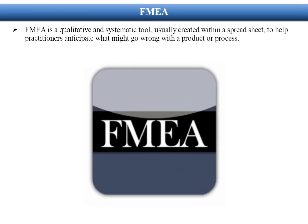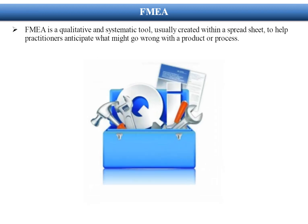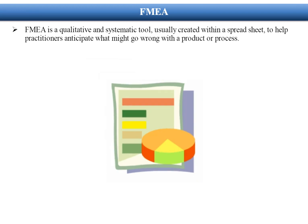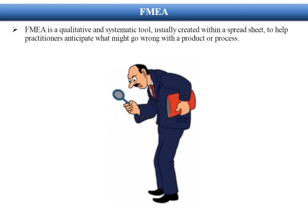FMEA is a qualitative and systematic tool, usually created within a spreadsheet, to help practitioners anticipate what might go wrong with a product or process.